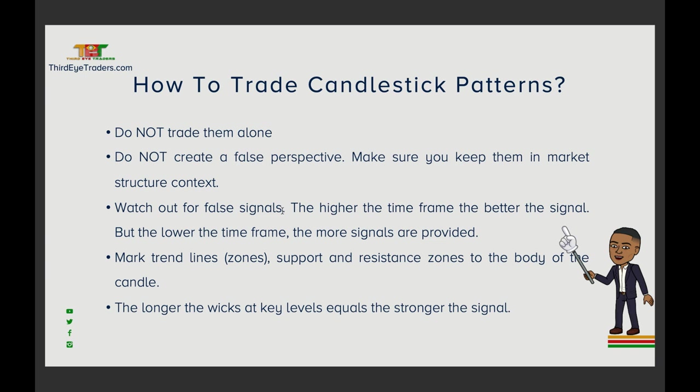Mark trend lines, zones, support and resistance zones to the body of the candle. We don't draw a trend line or zone to a wick one time and then draw to the body the next — we keep it consistent. The trend zones, trend lines, support zones — all of this is going to be tailored to the body of the candle. We want that line or zone to either touch the body of the candle or be at the tip of the body. As long as you keep a consistent set of rules, you're going to have success.